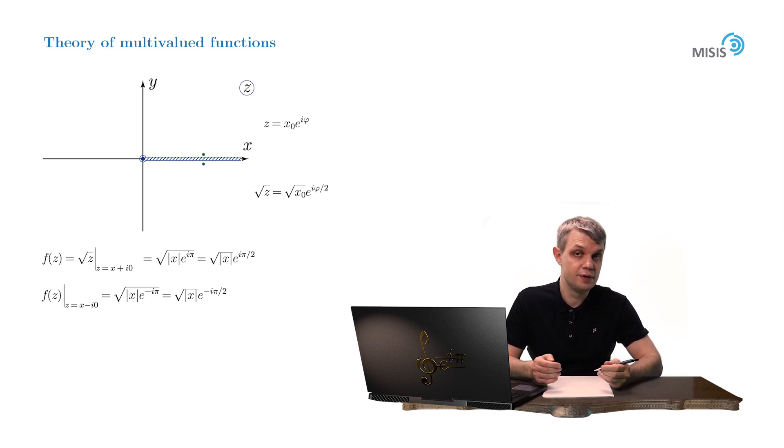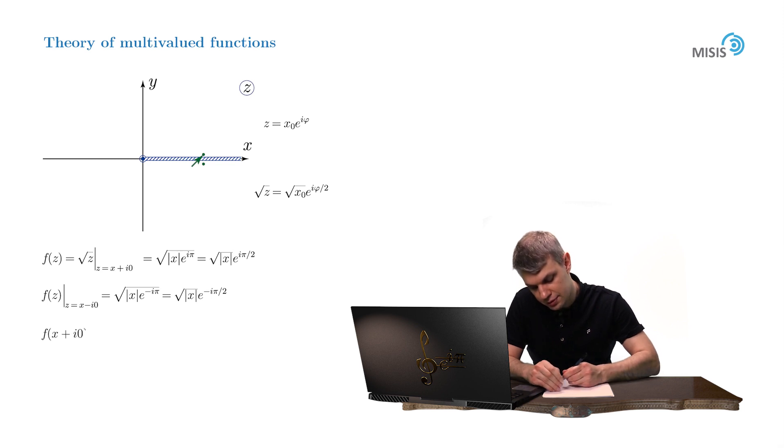Suppose we decide that our square root function assumes the arithmetic values on the upper bank of the branch cut. So we denote it as f(x + i0) equals the square root of x for positive x.